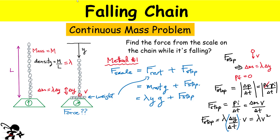We'll simplify the expression using conservation of energy. Every link has fallen the same distance Y and the whole chain falls at the same speed — otherwise the chain would be getting longer or shorter. So let's use conservation of energy on the next page.